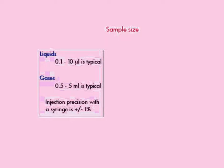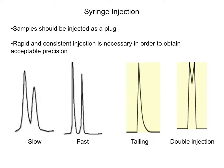We will be injecting about a half a microliter using a one microliter syringe. This amount is so small that if you apply it to your fingernail, you can't even see it. It is important that you inject the sample smoothly and all at once. If you inject too slowly, the peaks are broad and poorly defined, like the first set of peaks. You want your peaks to look like the second set of peaks — sharp and clearly differentiated.